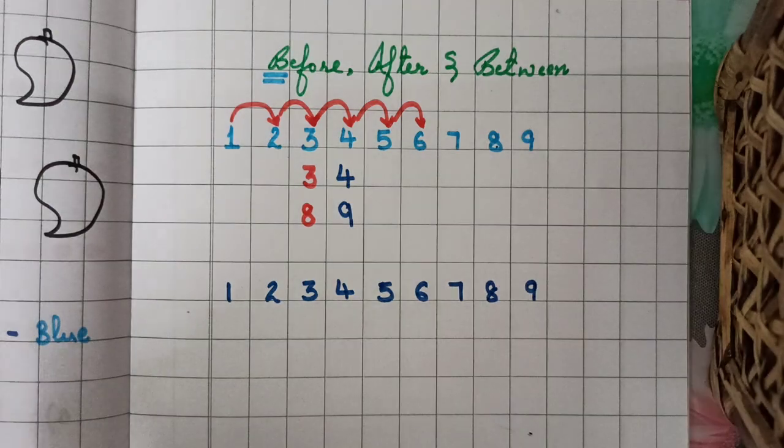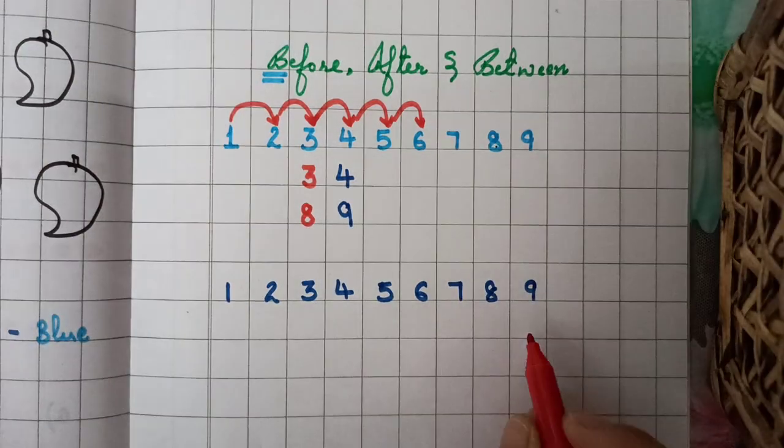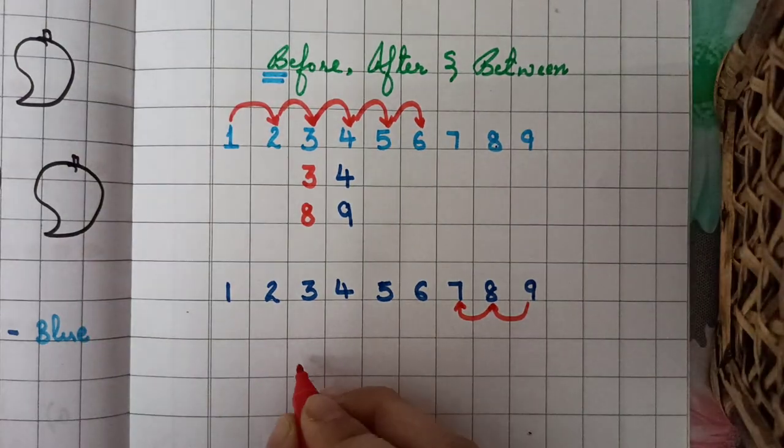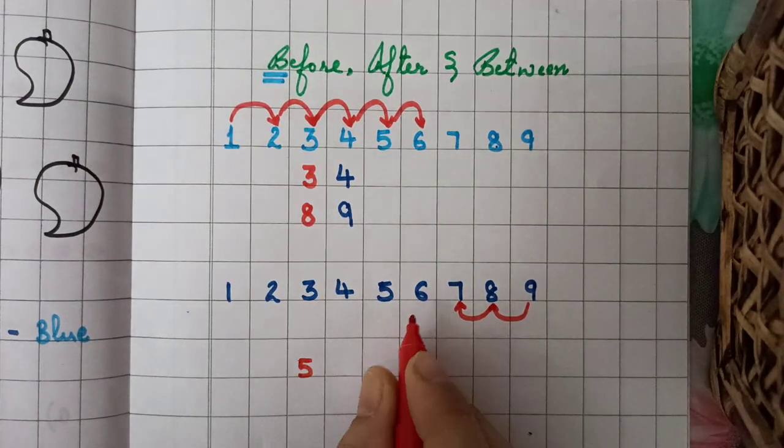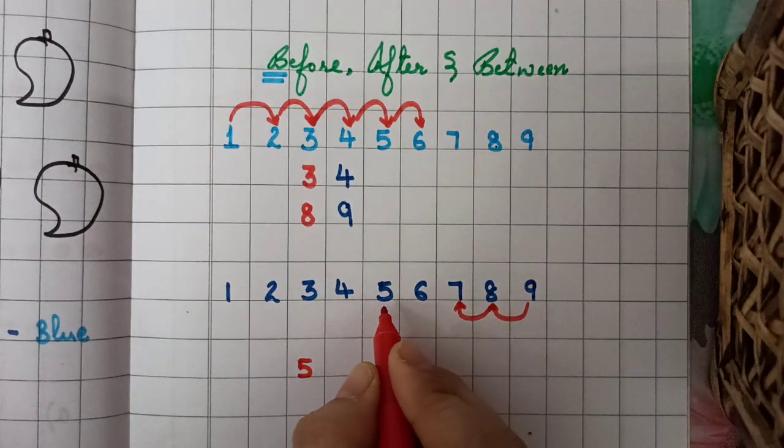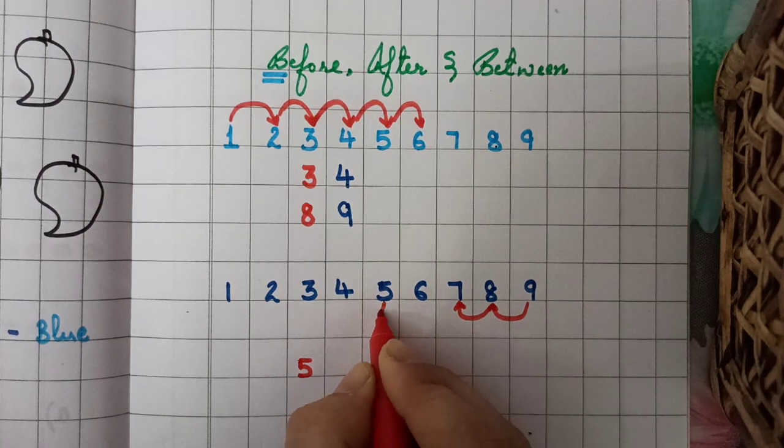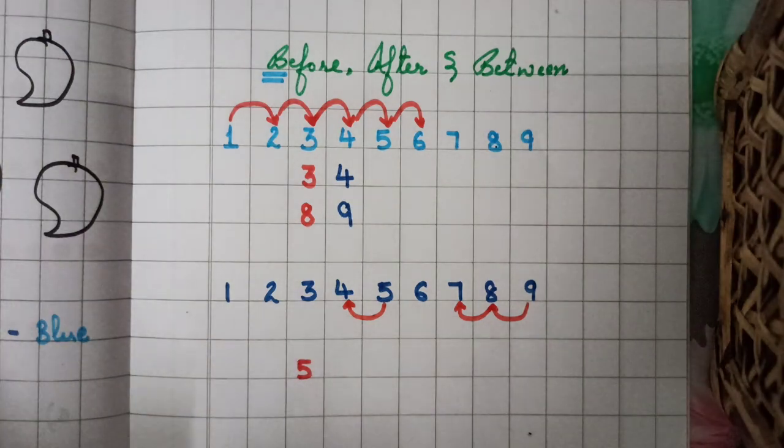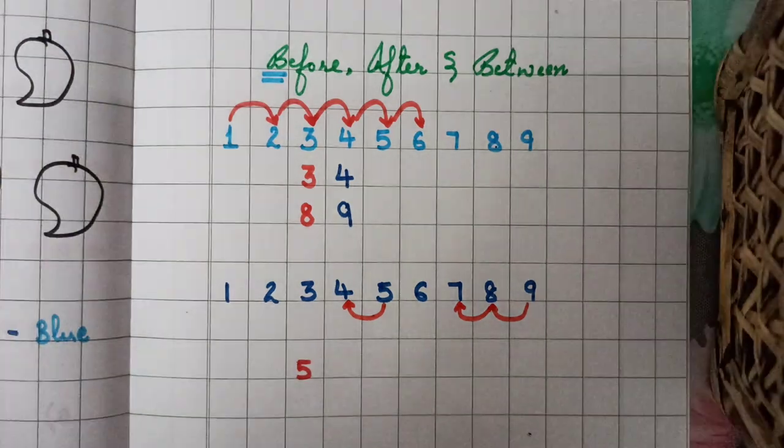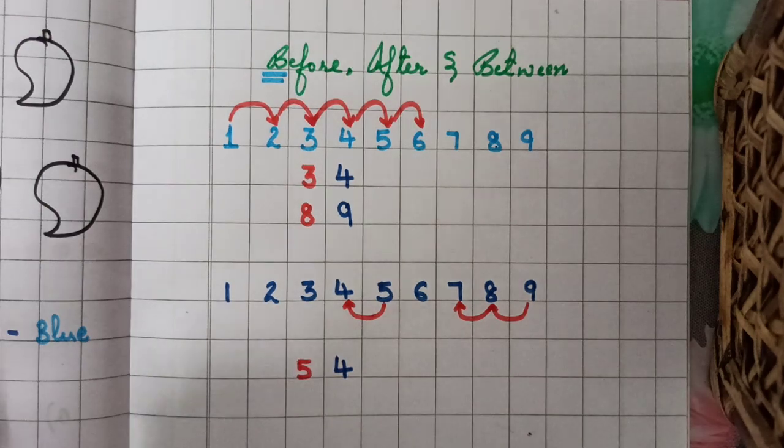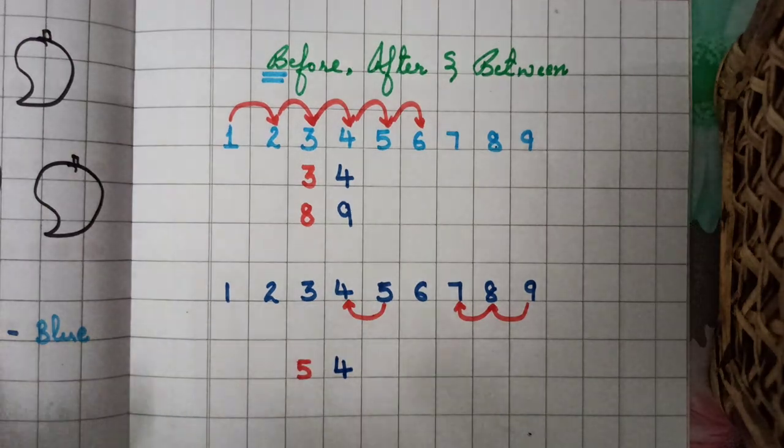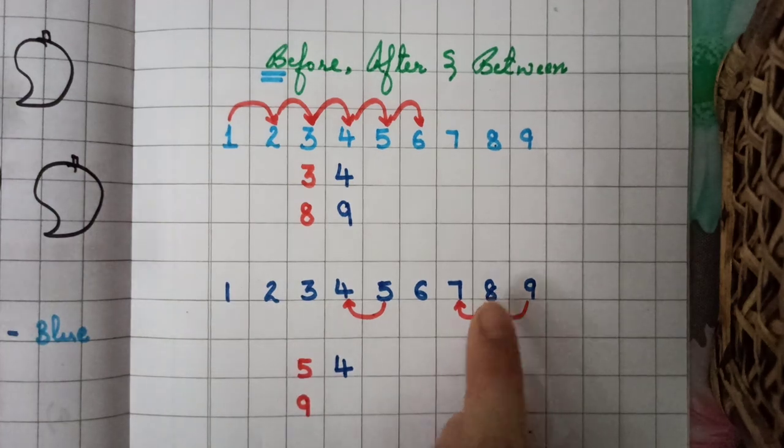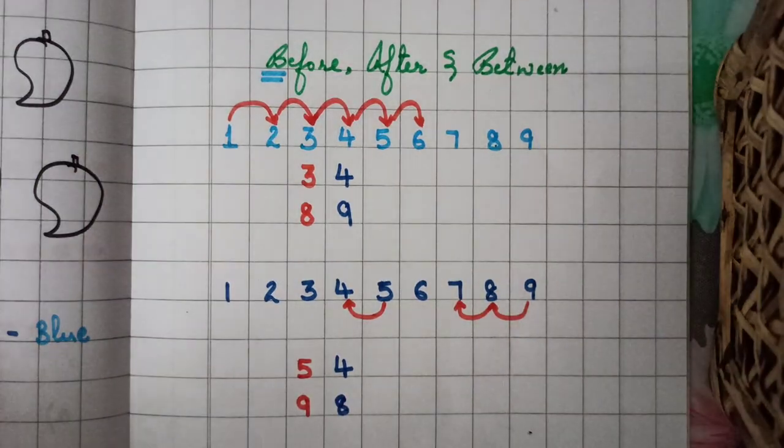So now we have to do backward counting. See, from 9 to 8, 8 to 7, and so on. So suppose in case if I ask, what comes before 5? So we have to hop backwards, so after 4, so before 5, it comes 4. What comes before 9? See, so we will hop like this, and the answer is 8.